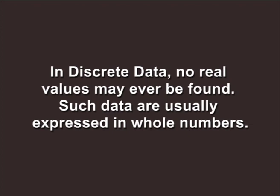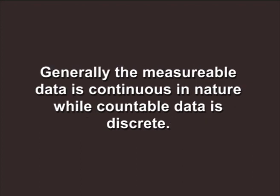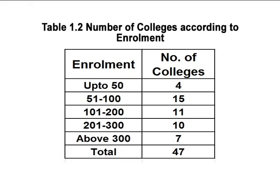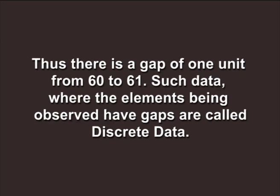In discrete data, no real fractional value may ever be found; such data are usually expressed in whole numbers. The size of a family, enrollment of children, and number of books are examples of discrete data. Generally, measurable data is continuous in nature while countable data is discrete. For example, in Table 1.2, the enrollment of two colleges may be 60 and 61, but there cannot be any number in between, as enrollment will always be in whole numbers. Thus there is a gap of one unit from 60 to 61. Such data where the elements being observed have gaps are called discrete data.